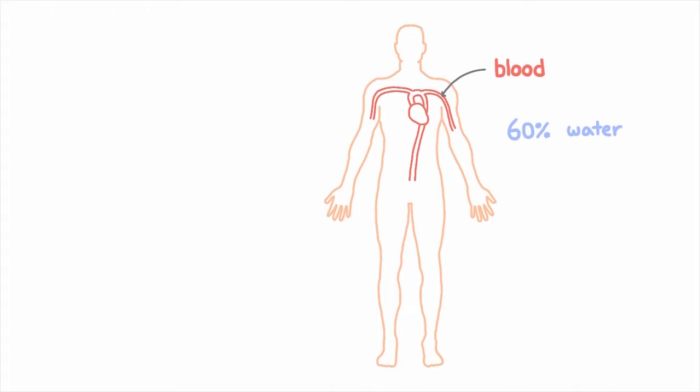But actually your blood only contains a small fraction of the water in your body. Many of the structures in your body, like your internal organs, your skin, your eyes, are made up of cells. And most of the water in your body is either inside those cells or around them.